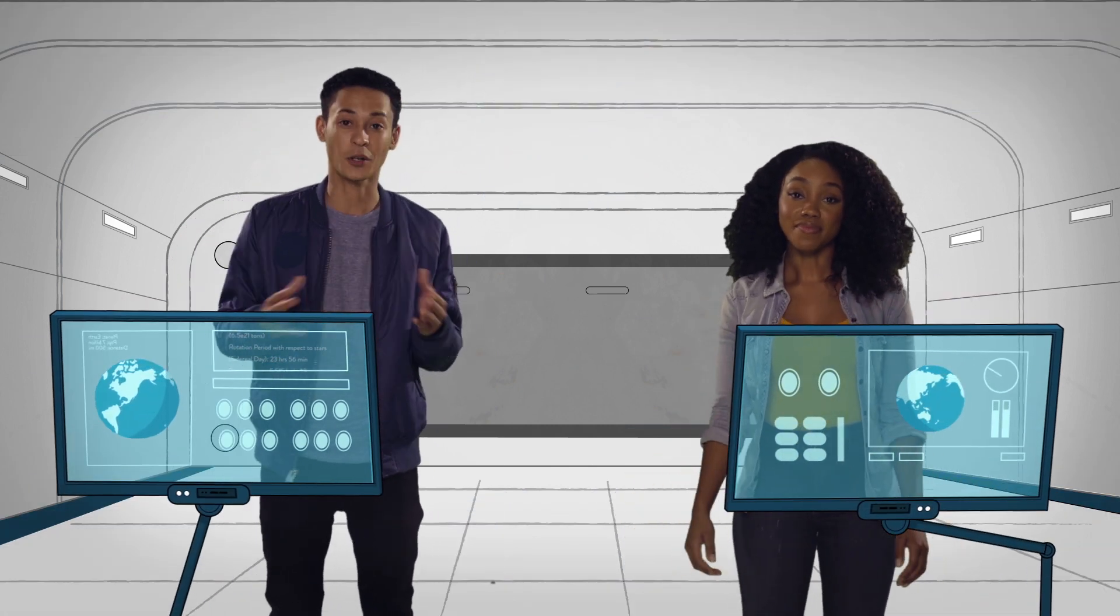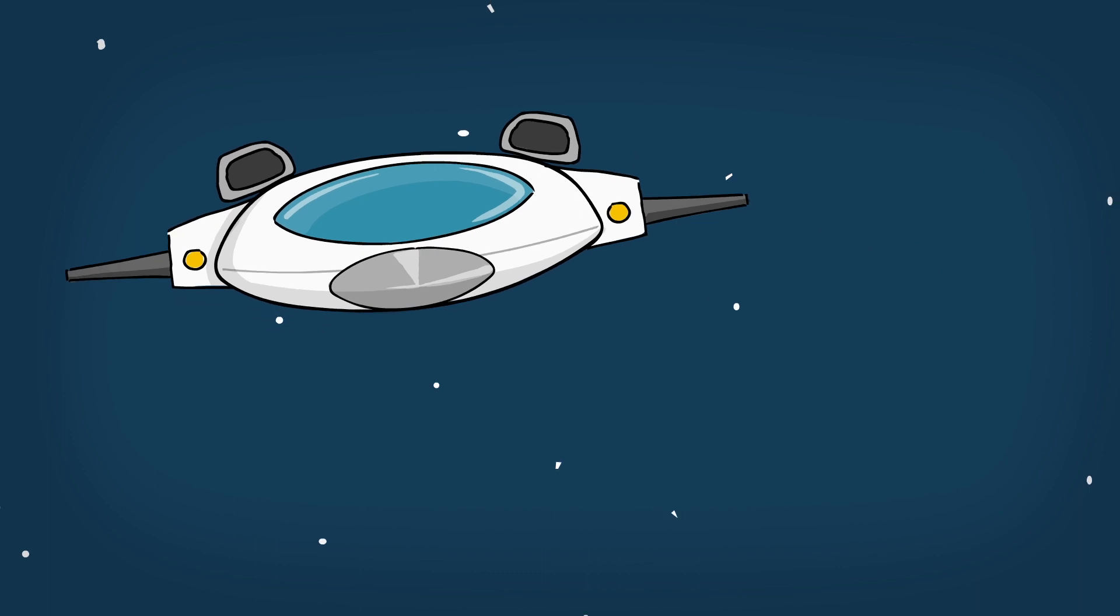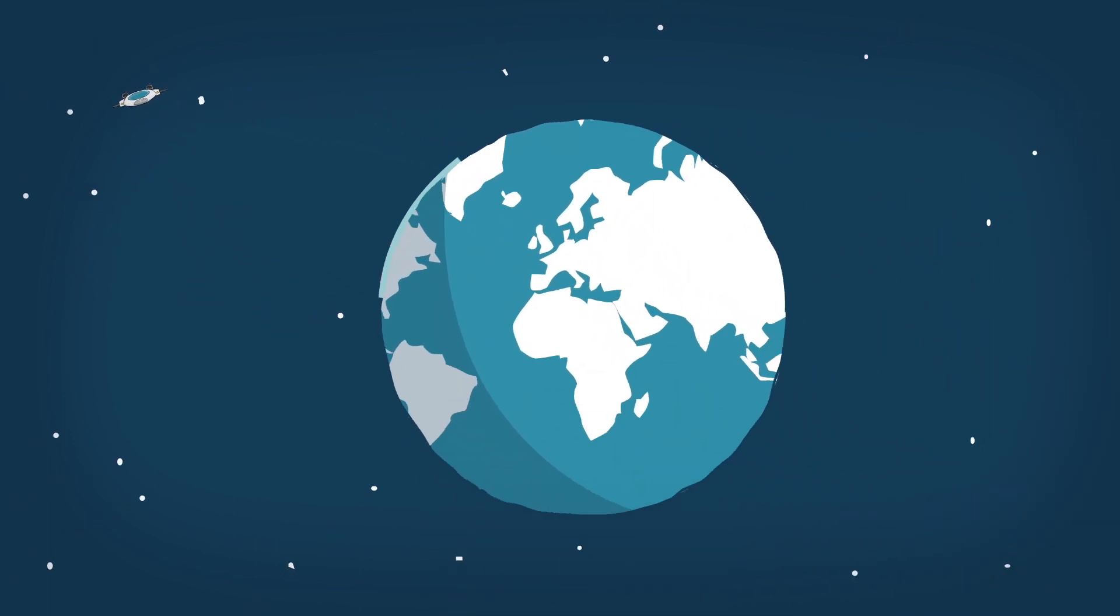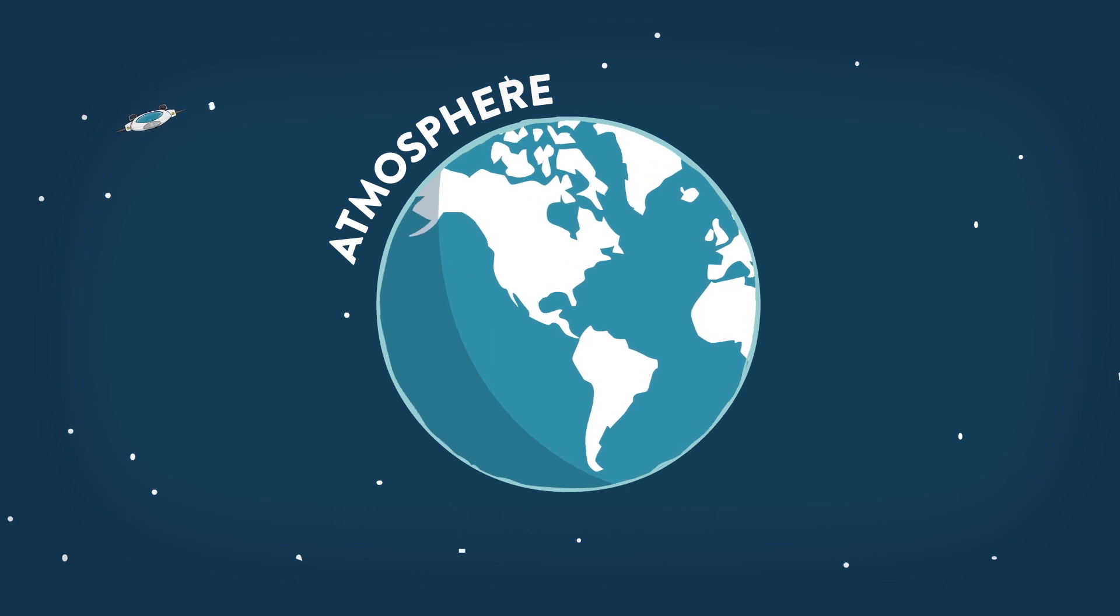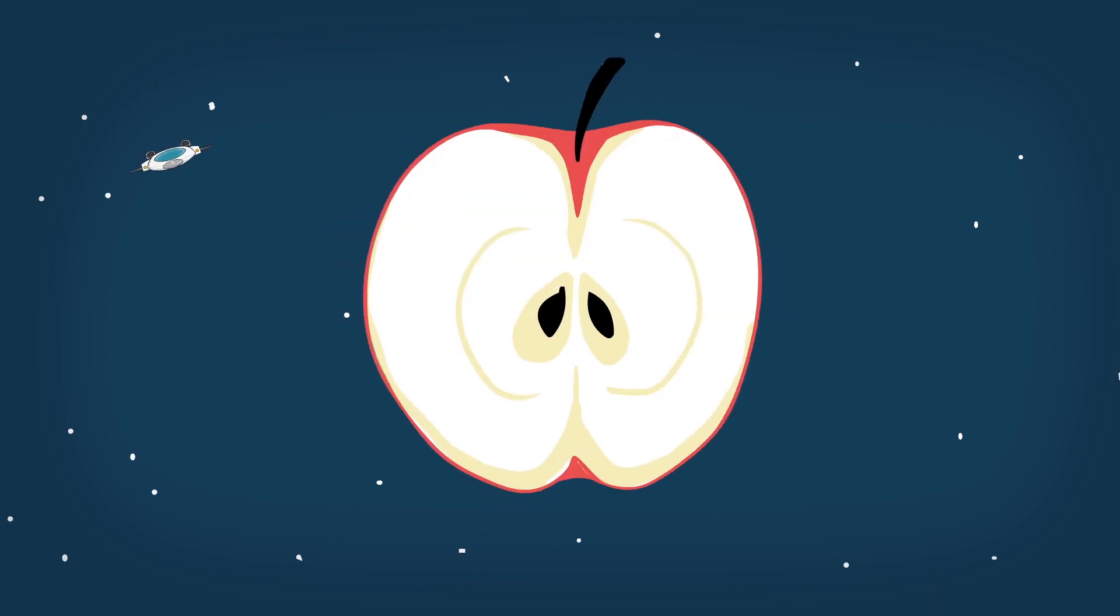One of the main reasons we call this little planet home is because it has this really nice thin layer of air around it called the atmosphere. If the earth was an apple, the atmosphere would be only as thick as its skin.